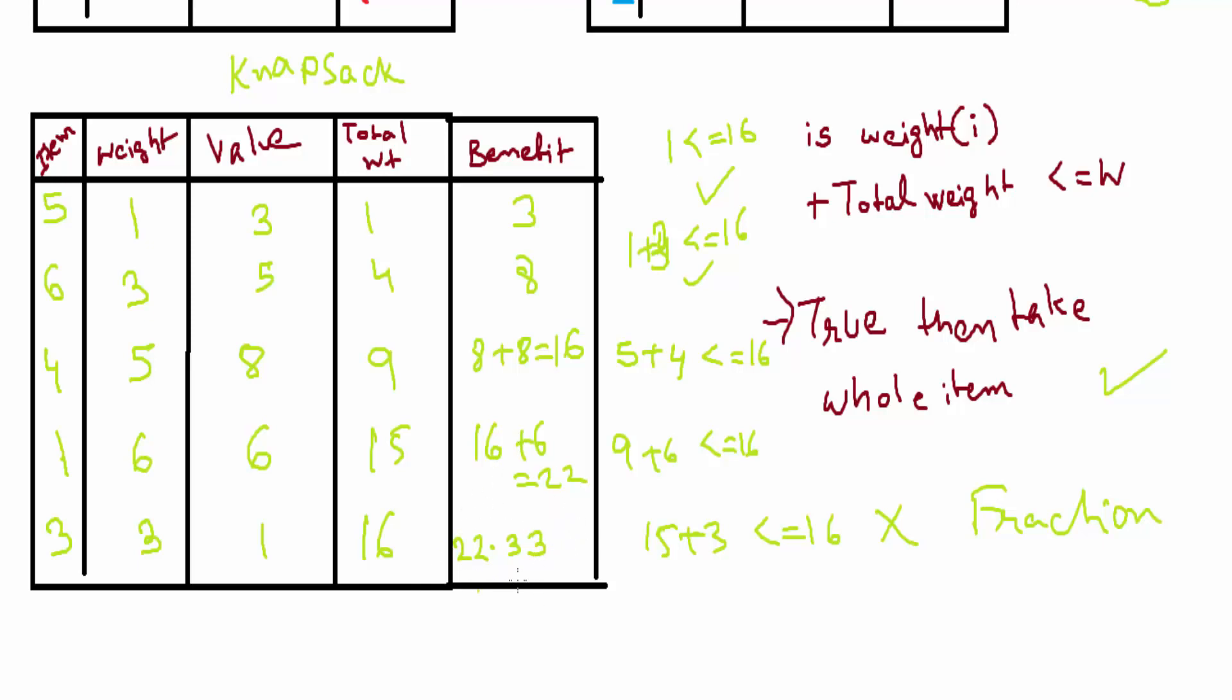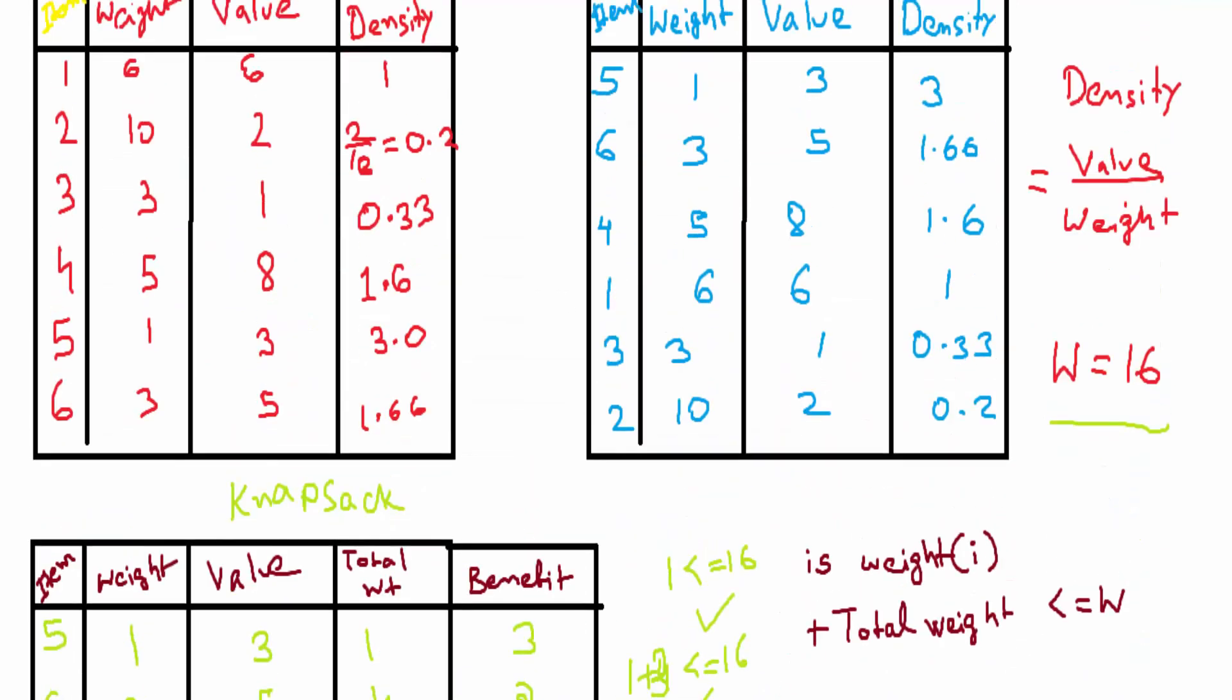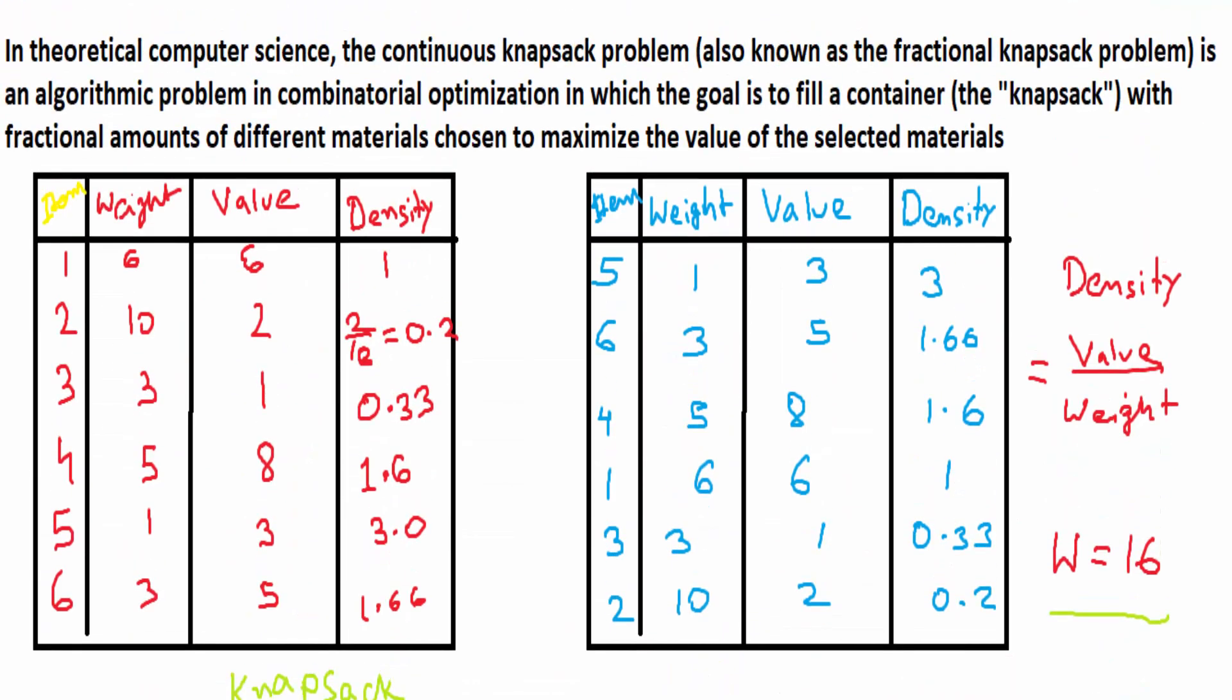This will be our knapsack benefit when our maximum capacity for knapsack is 16. This is how you solve fractional knapsack problems. Thanks for watching.